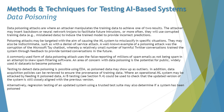A well-known example of a poisoning attack was the corruption of Microsoft's Tay chatbot, where a relatively small number of harmful Twitter conversations trained the system through feedback to provide tainted conversations in the future. A commonly used form of data poisoning uses false reporting of millions of spam emails as not being spam, in an attempt to skew spam filtering software. A major concern is the potential for widely-used public AI datasets to become poisoned.